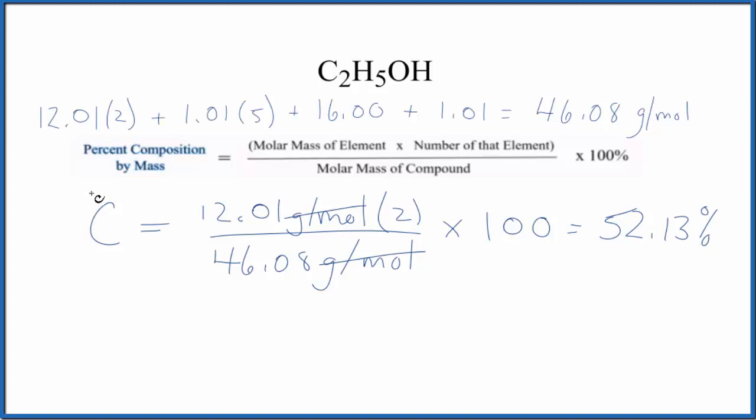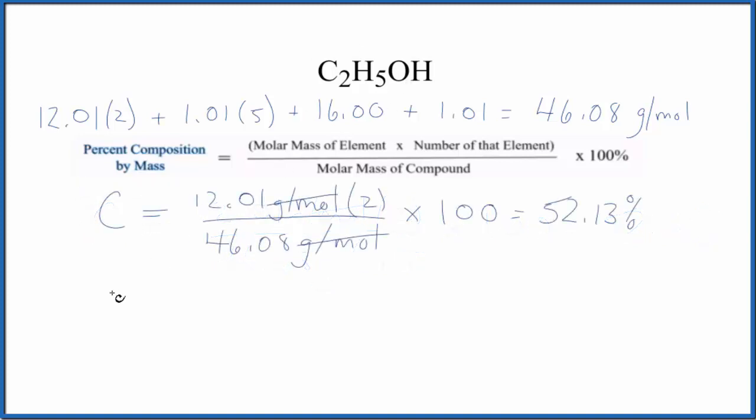Let's do the hydrogen and then the oxygen. For the hydrogen, hydrogen is 1.01 grams per mole. I won't write the units since they just cancel out. And we have 5 plus the 1 here. So we have 6 hydrogen atoms. That's the number of the element. Divide by the molar mass of the compound. Multiply by 100. We end up with 13.5% for the hydrogen in C2H5OH.